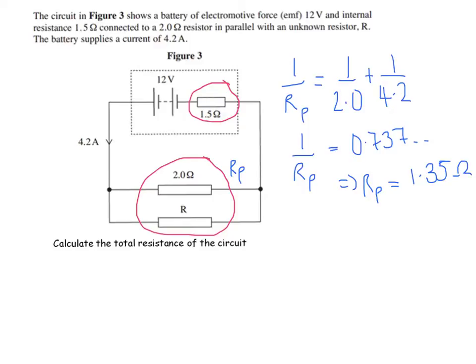That parallel set of resistance is in series with the internal resistance, so you just add them together: 1.5 plus 1.35 gives 2.85 ohms.